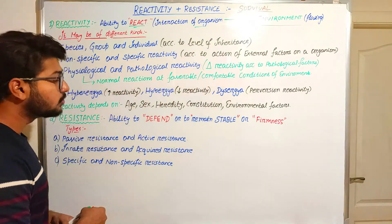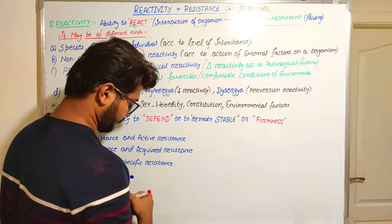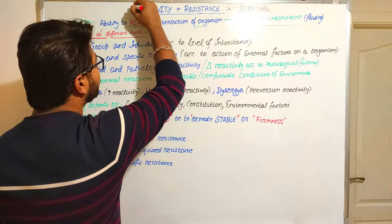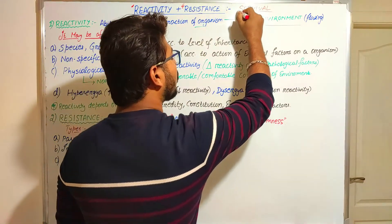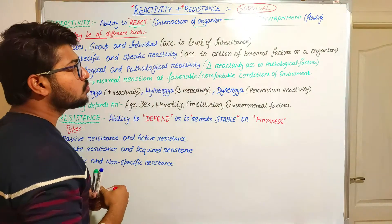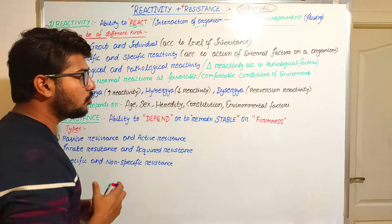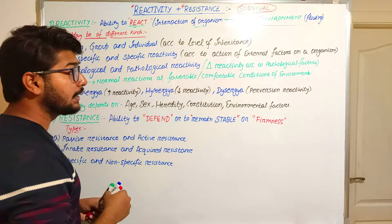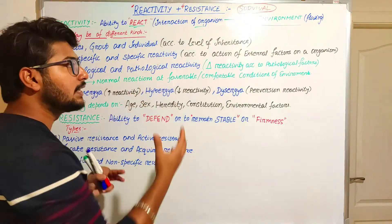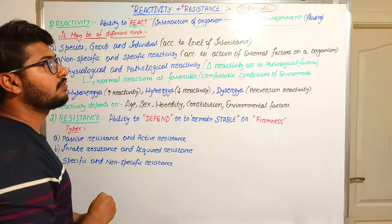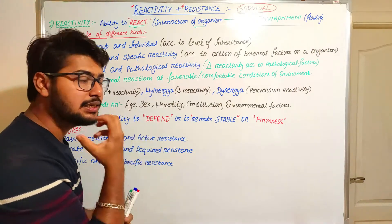Before starting today's topic, I want to give a short definition for both reactivity and resistance: they represent the tendency of the organism to survive. What we are going to read today is reactivity and resistance, and how they lead to the survival of organisms. These things are interrelated and act as important factors with the changing environment.